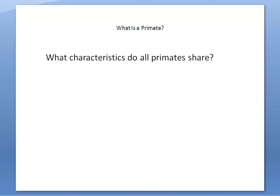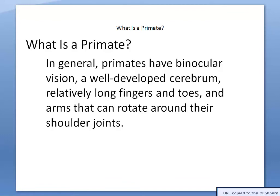So what characteristics do all primates share is what we're going to start with. In general, primates have what's known as binocular vision. They have a well-developed cerebrum, they have relatively long fingers and toes, and they have arms that can rotate around their shoulder joints. These are the characteristics that almost every single primate has in common.